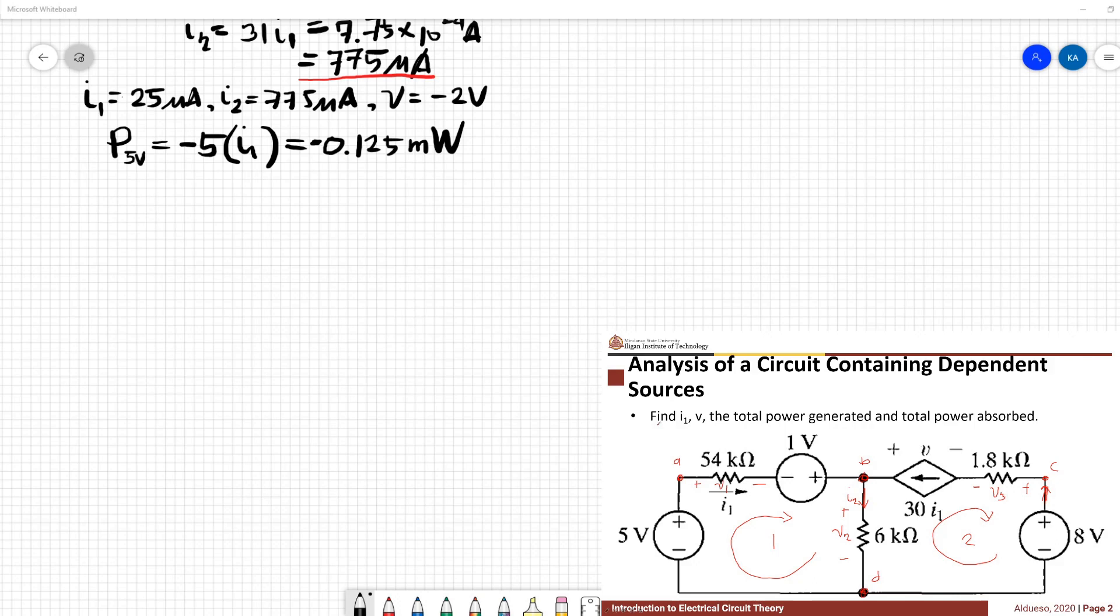So next, we have this 54 kilohm resistor. The power of the 54 kilohm resistor - remember, in terms of current, the power of the resistor is equivalent to i1 squared times R54k. We have 33.75 microwatts.